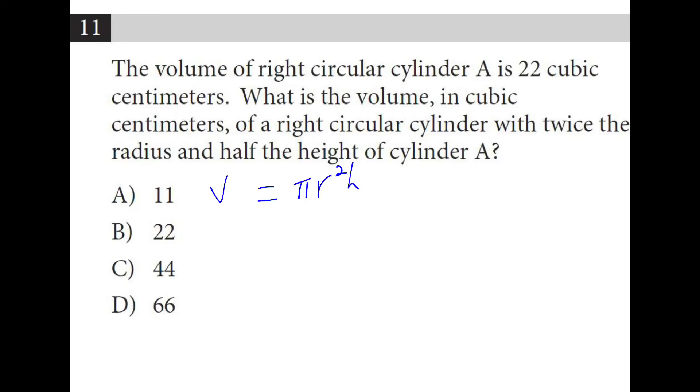Also from the formula page, we get the right circular cylinder formula, which is π r squared times the height. So cylinder A has a volume of 22 cubic centimeters.